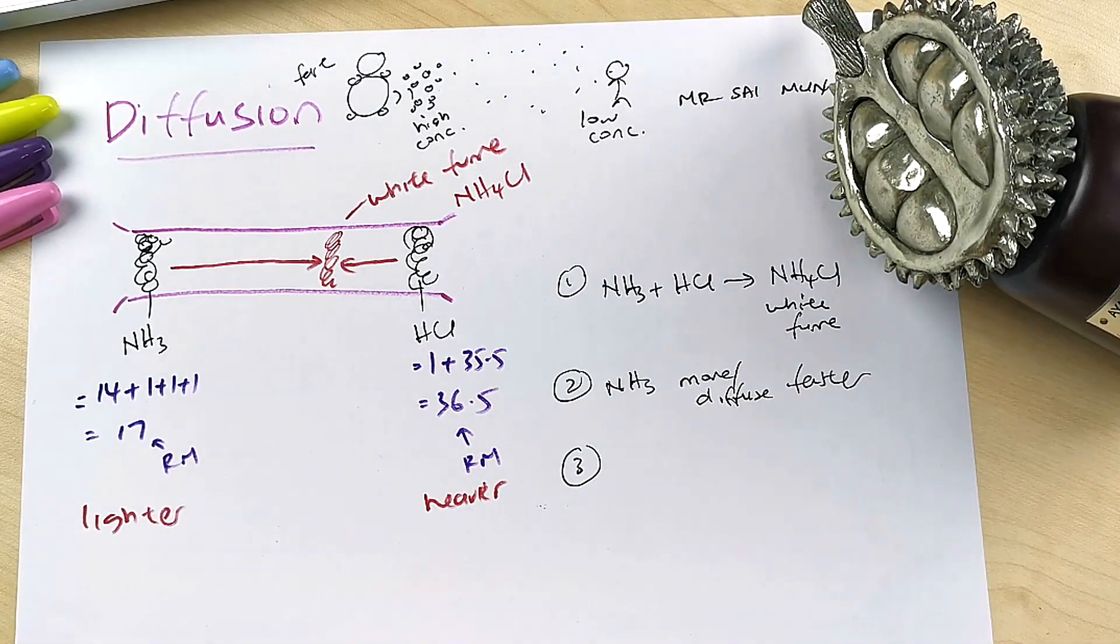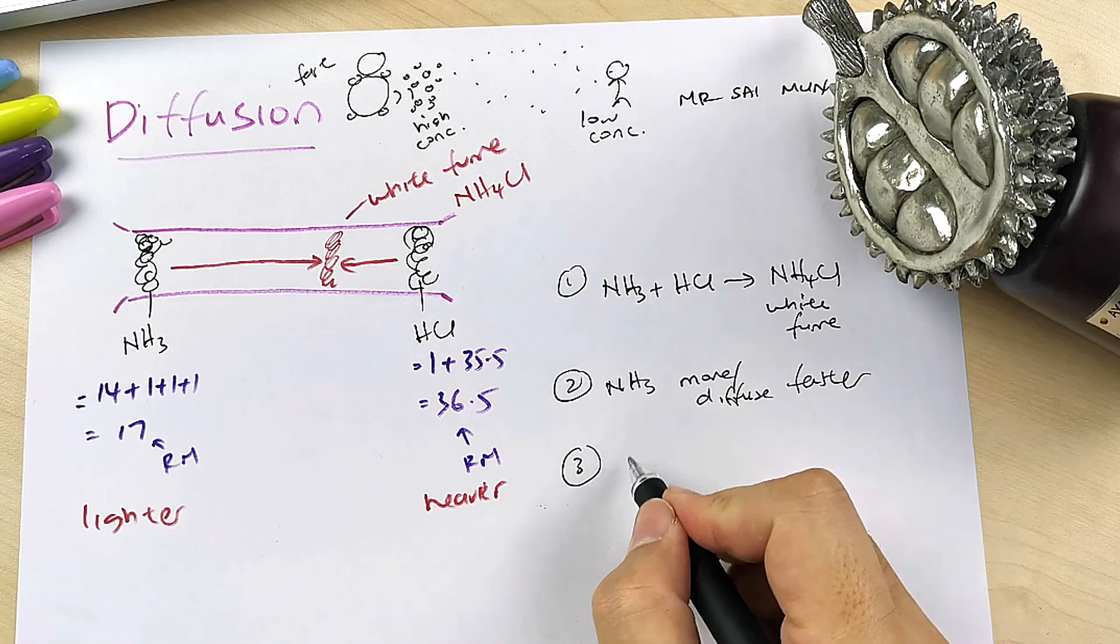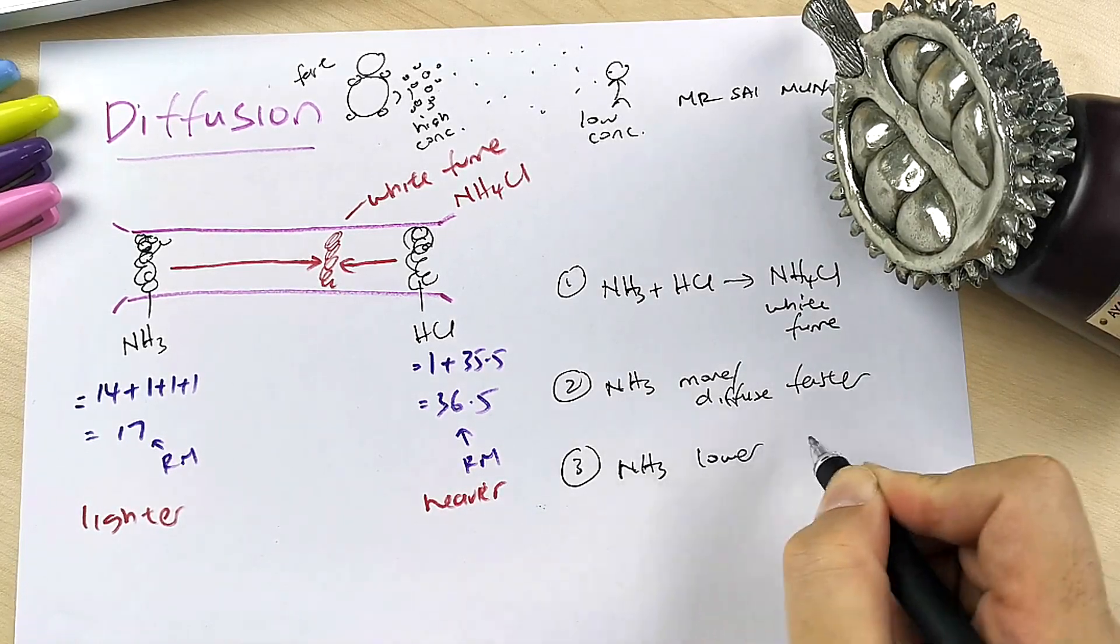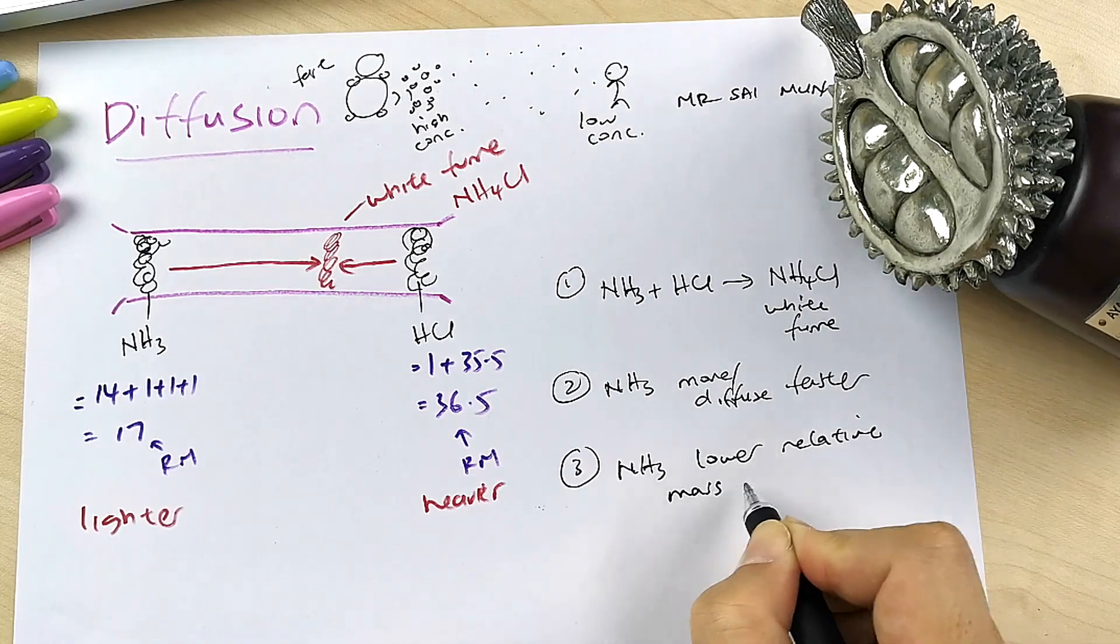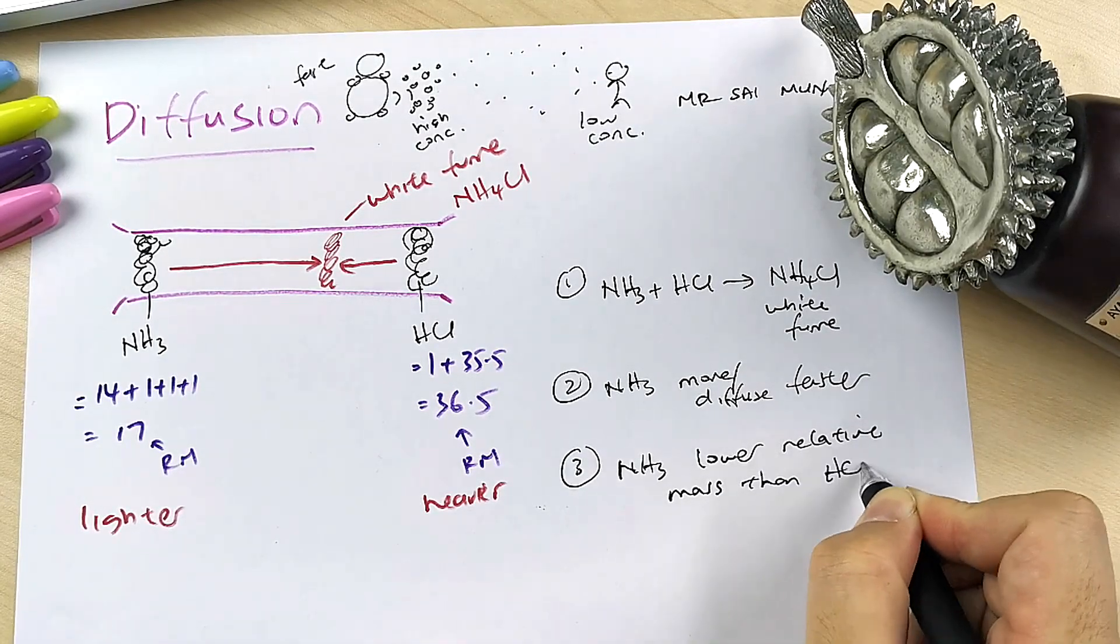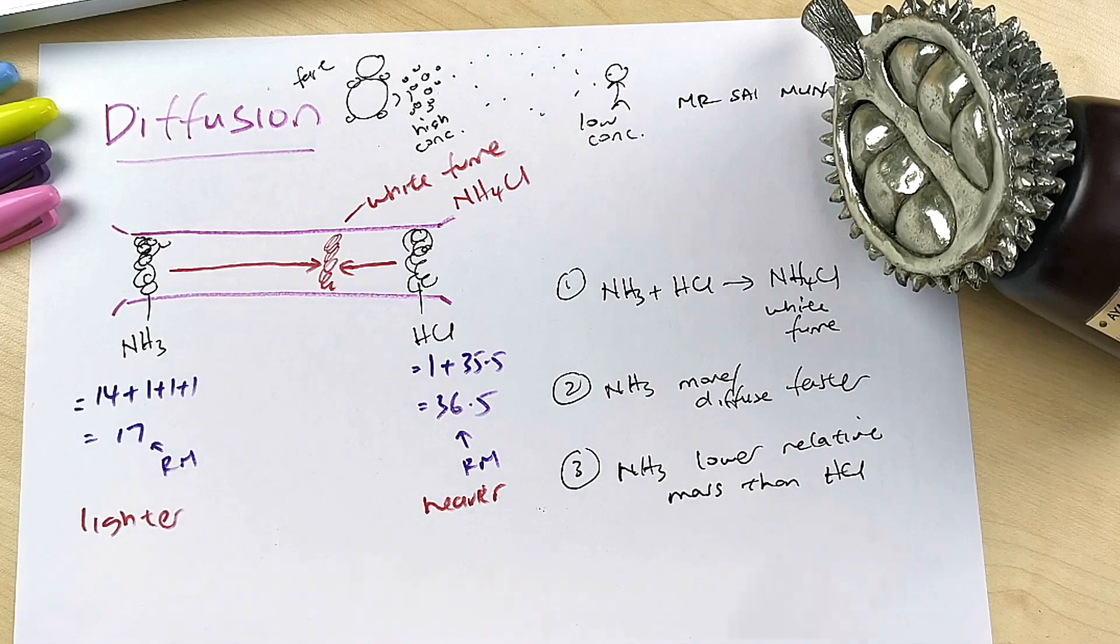And why? So is it because ammonia has lower relative mass than hydrogen chloride?